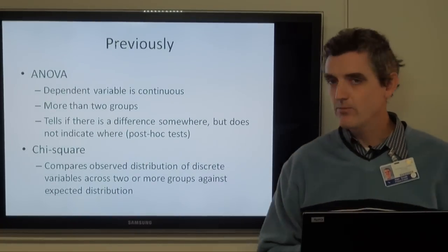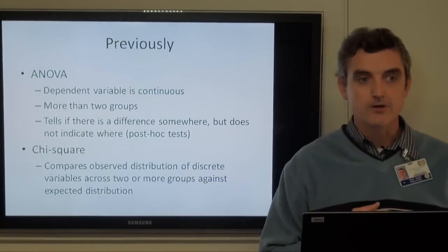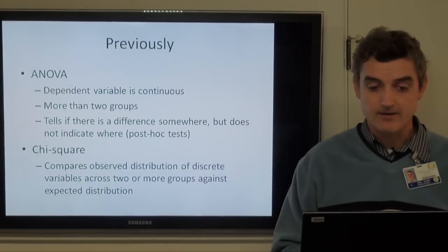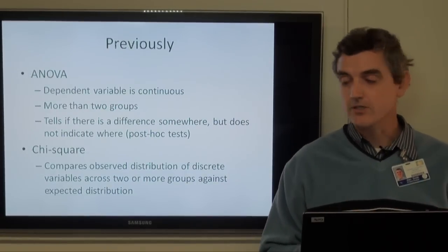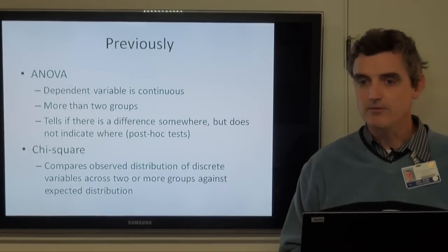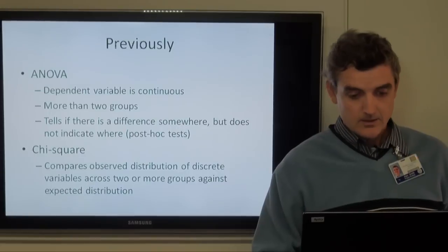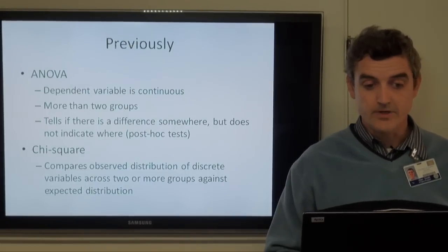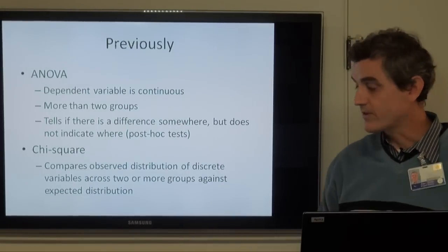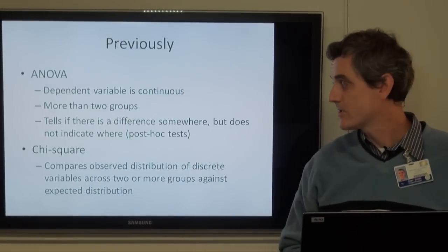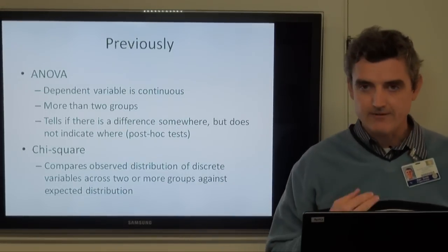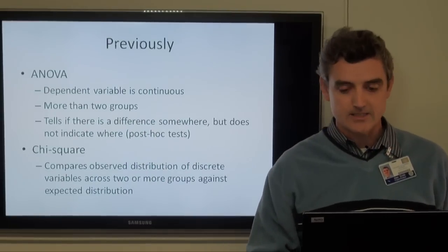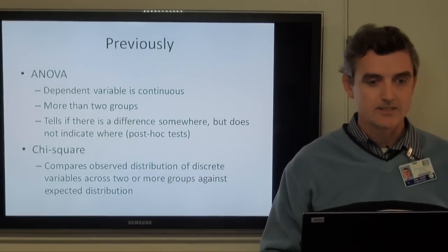Chi-square is the other one where you can compare multiple groups just across levels of a discrete variable. But remember with chi-square you can only use that if the minimum expected value in any cell in the table is at least five.